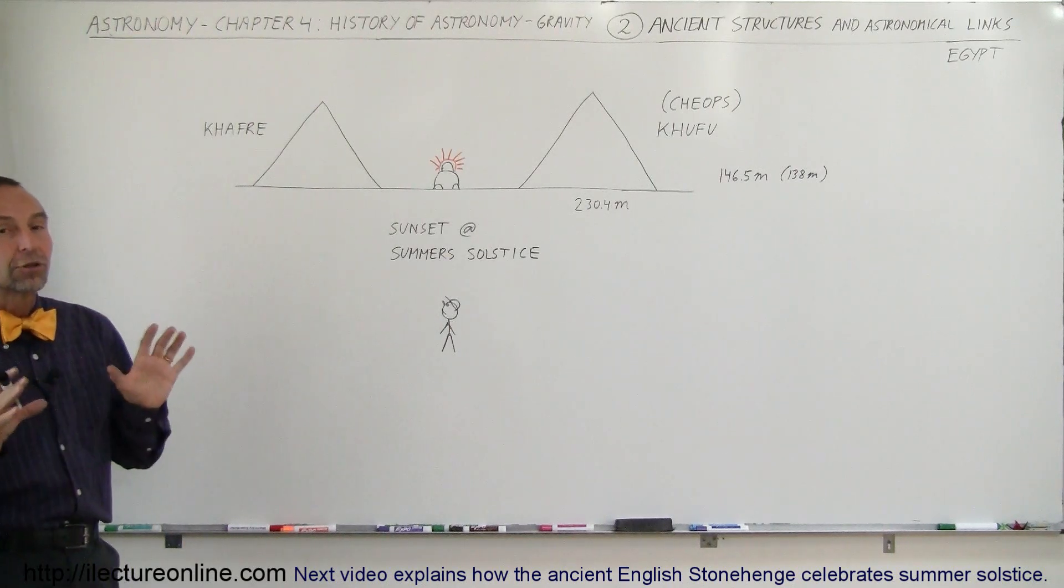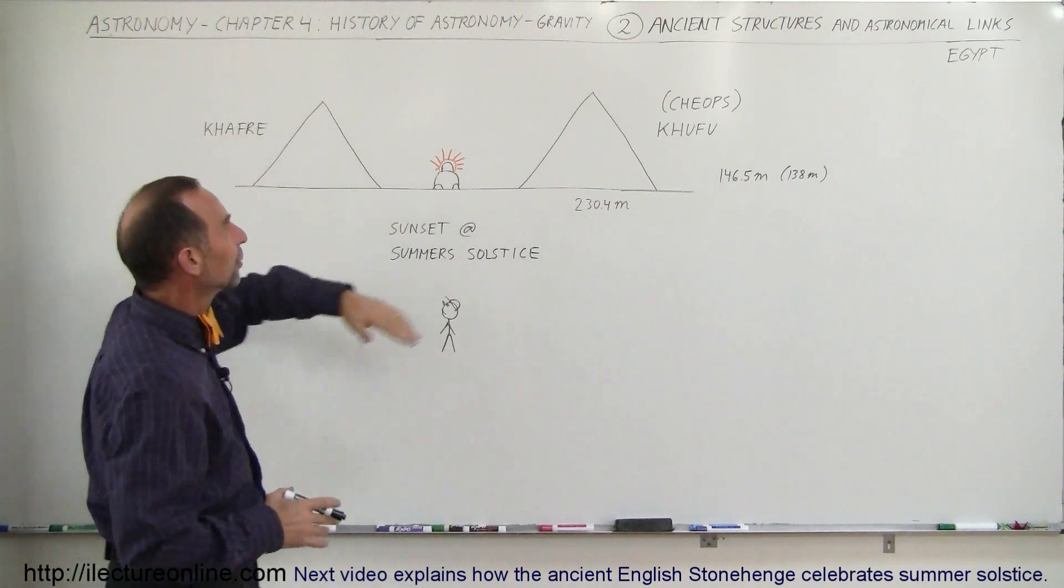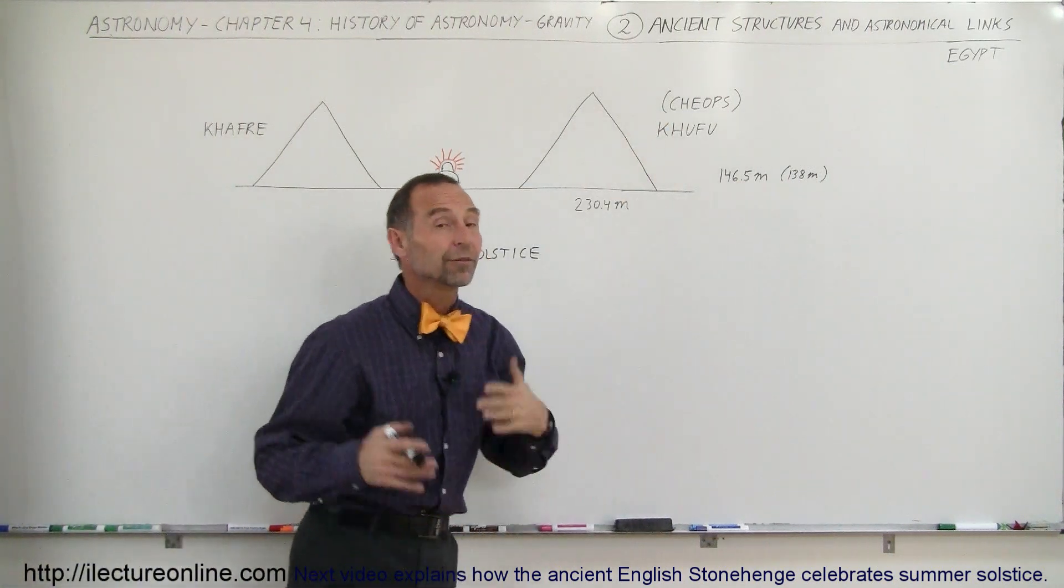If you go to Egypt and you look at the two largest of the pyramids, the Pyramid of Khafre and the Pyramid of Khufu, also known as the Pyramid of Cheops,